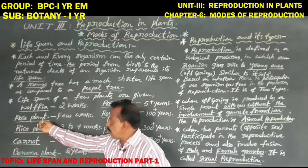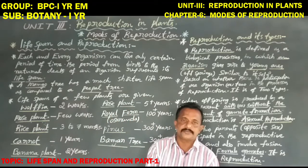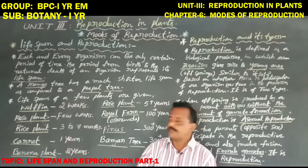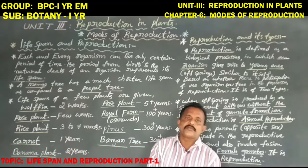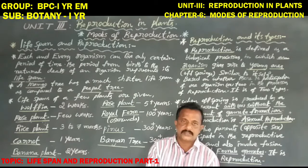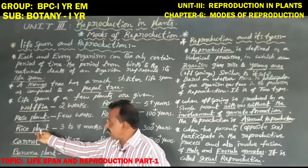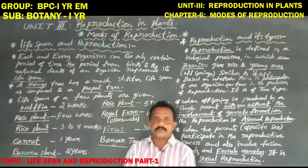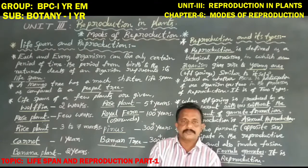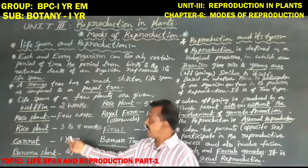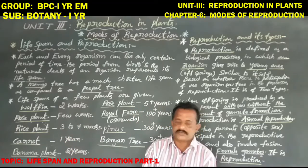Next, coming to moss plant — that is Bryophyta. Its life span is a few weeks, that is three or four weeks. Next, coming to the rice plant. This is a monocotyledonous plant. Its life span is three to seven months.